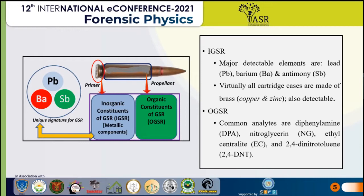Some common OGSR components include nitroglycerin, ethyl centralite, 2,4-DNT, and related compounds — these are common compounds considered for OGSR analysis.